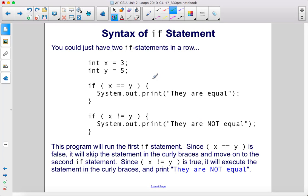This program will run the first if statement. Since x equals y is false, it will skip the statement in the curly braces and move on to the second if statement. Since x is not equal to y is true, it will execute the statement in the curly braces and print they are not equal.